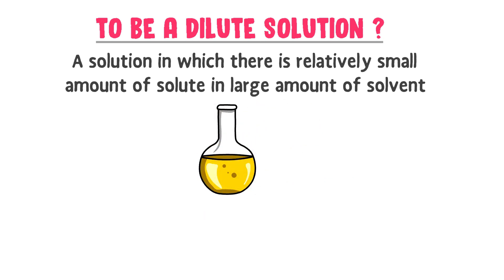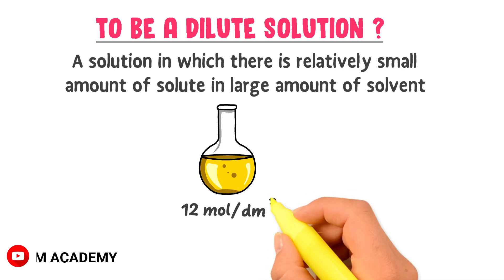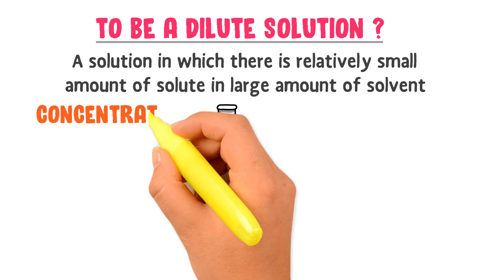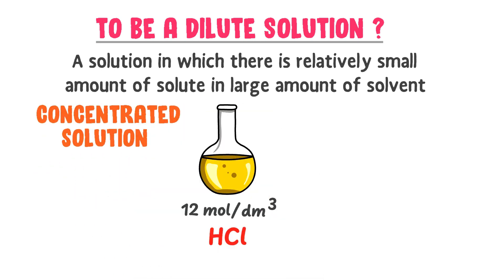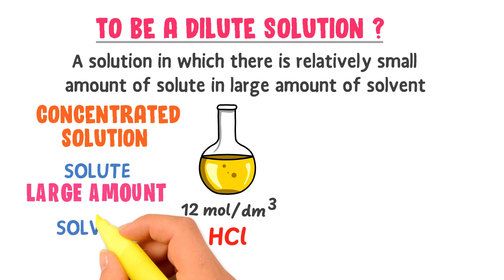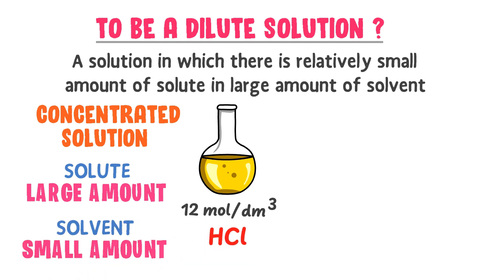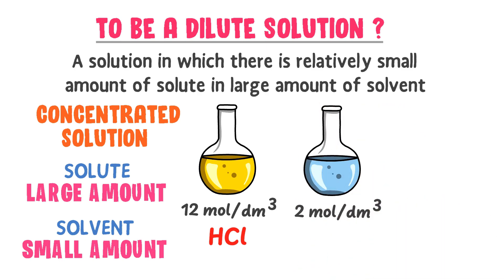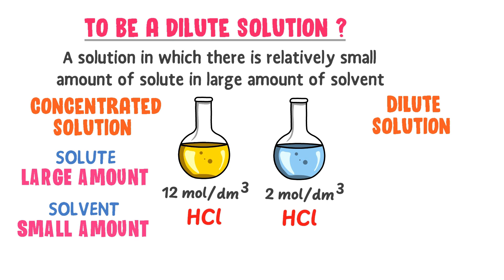For example, if you take a solution of 12 mol per dm³ of HCl (hydrochloric acid), it is considered a concentrated solution. But if you take a solution of 2 mol per dm³ of HCl (hydrochloric acid), it is considered a dilute solution.